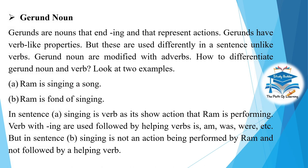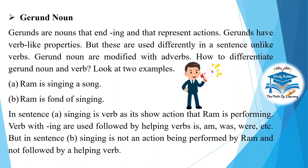Gerund noun: Gerunds are nouns that end in -ing and represent actions. Gerunds have verb-like properties but are used differently in a sentence, unlike verbs. Gerund nouns are modified with adverbs. To differentiate a gerund noun from a verb, look at two examples: A. 'Ram is singing a song' — here, singing is a verb as it shows an action Ram is performing. Verbs with -ing are followed by helping verbs: is, am, was, were, etc. B. 'Ram is fond of singing' — here, singing is not an action being performed by Ram and is not followed by a helping verb.